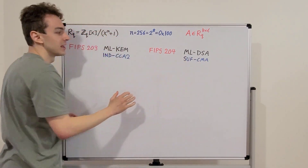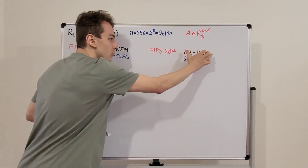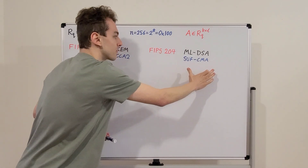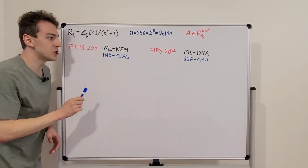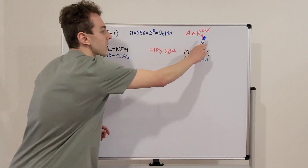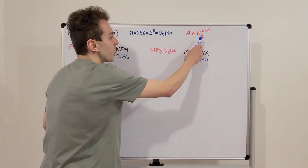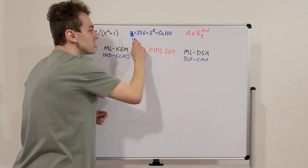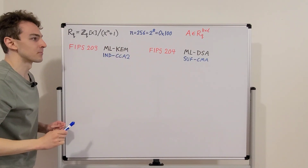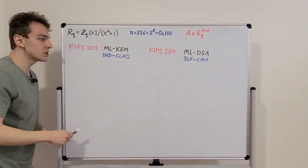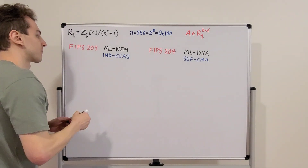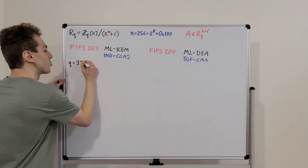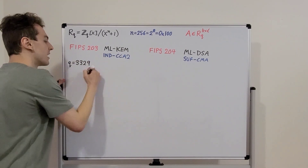So here we have the FIPS documents which outline how to implement these algorithms, the names of these algorithms, and the security models. Now let's introduce some values for these parameters. The constant N is 256, which is the same for both algorithms. But Q is different. For ML-KEM, the modulus Q is equal to 3,329. This is a prime number.